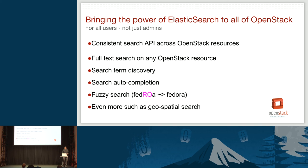Searchlight gives you a consistent search API across all of your OpenStack resources, full text search on any OpenStack resource, search term discovery so it can tell you what you can search for, autocompletion, and fuzzy search — so if you mistype something and put in the wrong letters, you'll still get results. We can also get into more interesting aspects such as geospatial search — if you put in latitude and longitudinal coordinates, you can do searches like that.